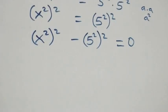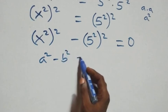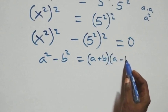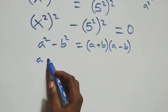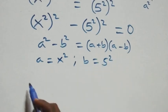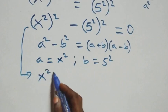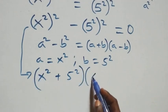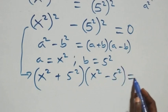Next step here, this follows the identity a squared minus b squared equals (a+b)(a-b), where a stands as x squared and b stands as five squared. So this becomes (x squared plus five squared)(x squared minus five squared) equals zero.